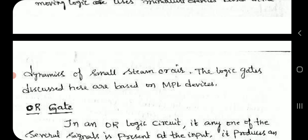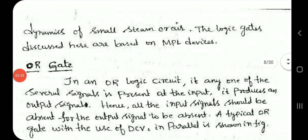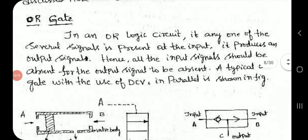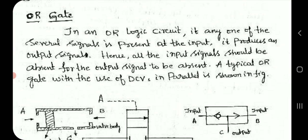The logic gates discussed here are based on MPL devices. OR gate: In an OR logic circuit, if any of the several signals is present at the input, it produces an output signal. Hence, all the input signals should be absent for the output signal to be absent. A typical OR gate with the use of direction control valve in parallel is shown in figure.